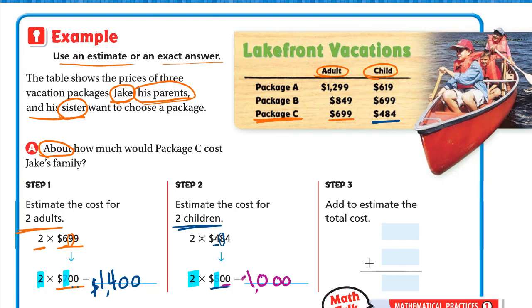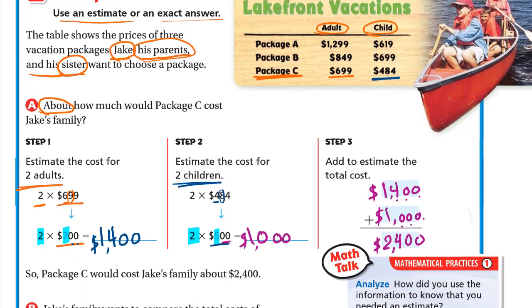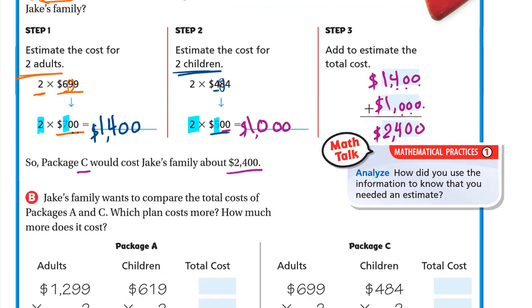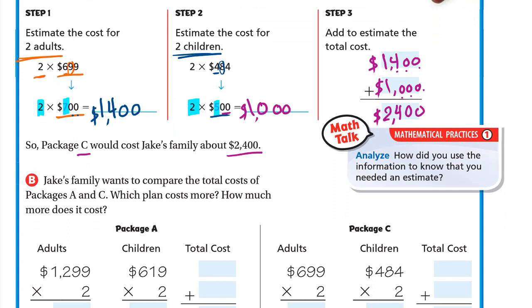That gives $1000 for the children. Now let's add to get the total estimate: $1400 plus $1000 equals $2400. So package C would cost Jack's family about $2400.